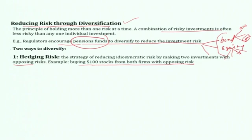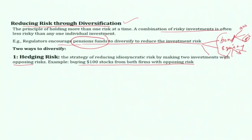Opposing risk means, for example: when there is an increase in oil prices, energy-producing companies benefit — their stock prices increase. At the same time, automobile firms see their stock prices decline because the cost of production increases, demand for automobiles declines when petrol prices rise, sales decline, and stock prices also decline.